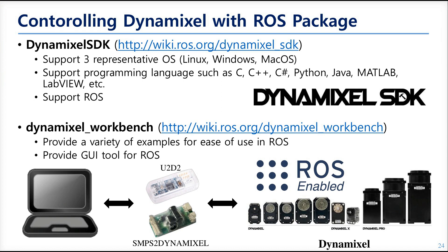There are two ways to control Dynamixel via ROS. The first is using the Dynamixel SDK, which is an API library that supports seven languages. In ROS, there is ROS C++, and recently a ROS Python version is being released. In this approach, you won't find pre-built nodes in the package — you need to create nodes that include or import functions from the Dynamixel SDK library.